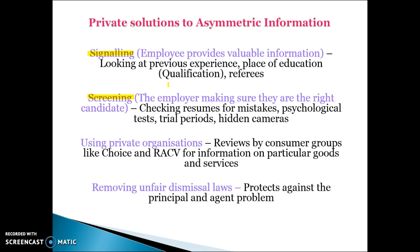Looking up Facebook and contacting mutual friends is an example of signalling to try and get the right applicants. Screening involves finding different ways to screen the applicant — the employer making sure they get the right candidate. That would include checking resumes for mistakes, psychological tests, trial periods, hidden cameras — all trying to prevent moral hazard by monitoring the way they work more consistently.